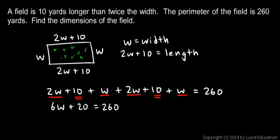And if I subtract 20 from each side, that will leave me with 6W on the left and 240 on the right. And then I can find W simply by dividing by 6. So I divide by 6 on the left and on the right. And on the left, the 6's cancel out, leaving me with W. And I have W is equal to 240 divided by 6. So W is equal to 40.